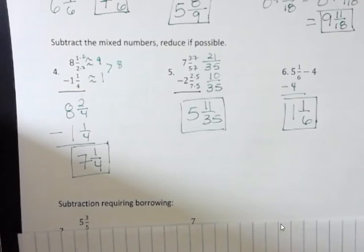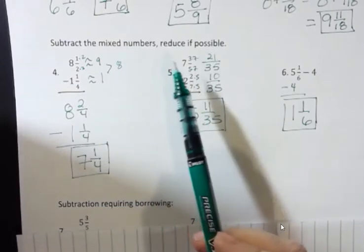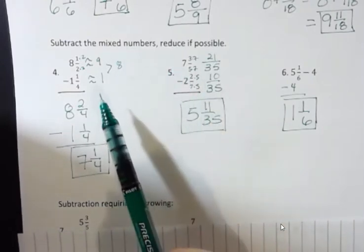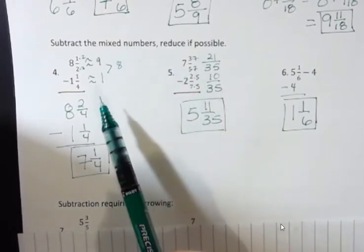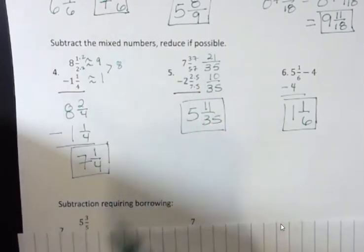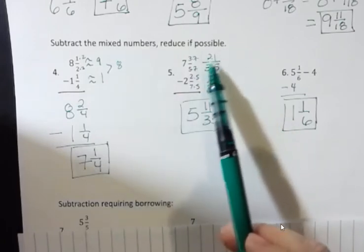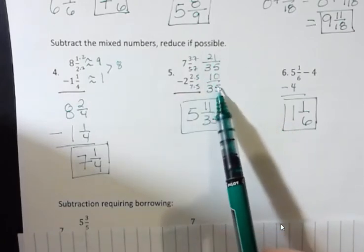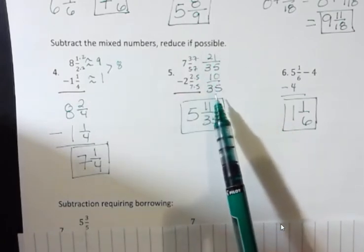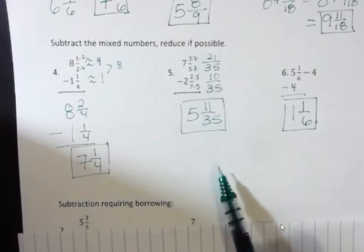Hello, I'm Carly McEvoy. I was talking about subtracting mixed numbers and I looked at the first three examples. They worked out nicely because we had a greater fraction on top and a lesser fraction on the bottom, so I was able to subtract those.